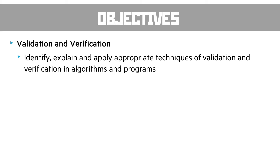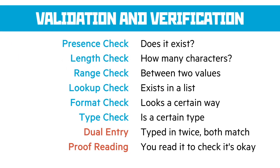Validation and verification is essentially a way of checking that the data typed into a program is correct, or at least looks correct. Validation is making sure the data is valid — it looks sensible — and verification is making sure the data is actually correct. Data can be valid without being correct, without being verified properly.